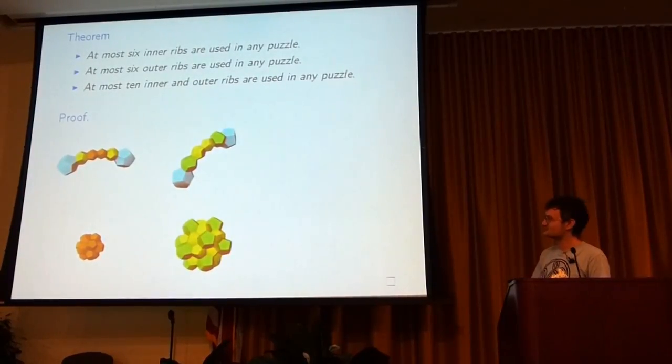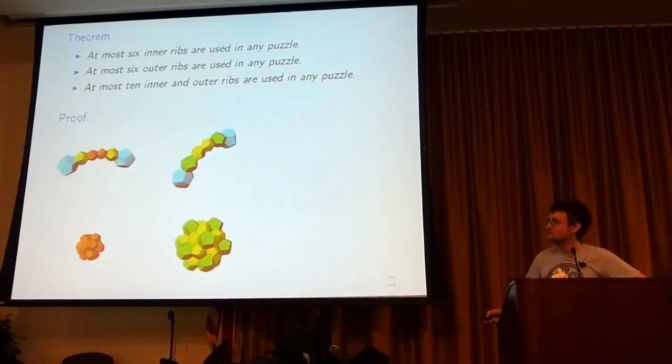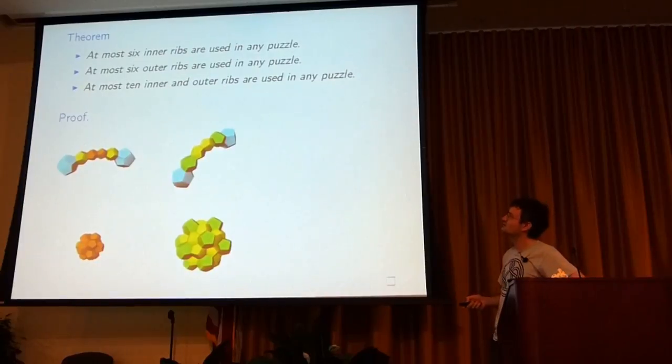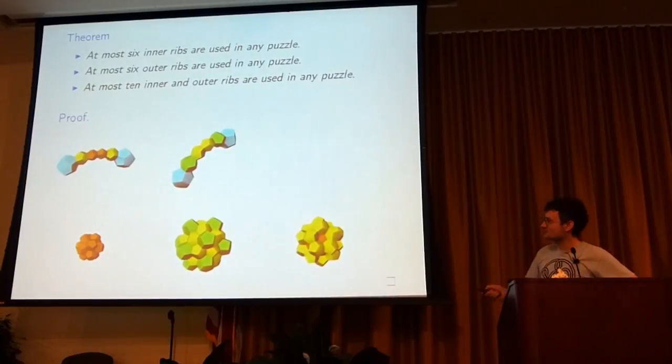Second fact, six outer ribs. It's actually the same argument. The fourth layer is this green layer, which has twelve dodecahedra. Again, the outer ribs have these two green dodecahedra here, so you can have at most six of them. And the last one, the third layer has twenty yellow dodecahedra. And the inner guy and the outer guy both pick up two of those yellow guys. And we have puzzles which hit all of these limits.